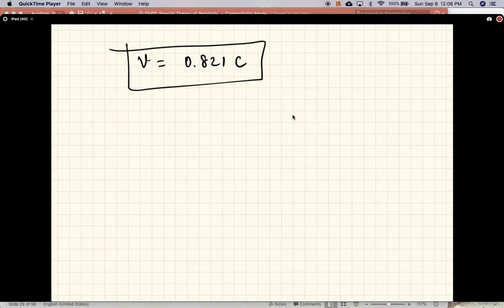So the muon speed is 0.821 c - 82% the speed of light. That finishes that problem.